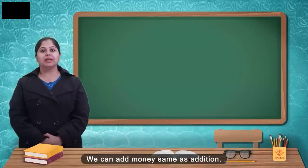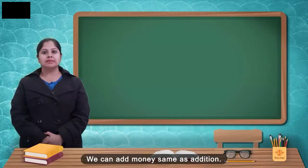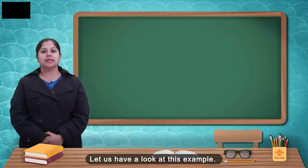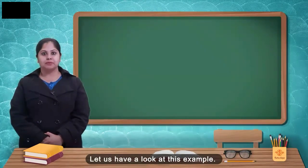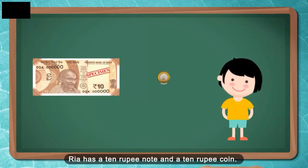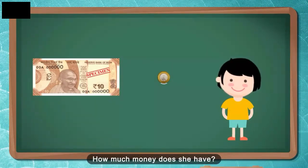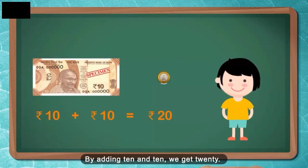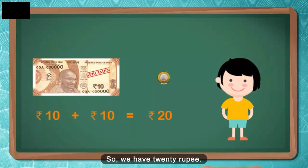We can add money same as addition. Let us have a look at this example. Rhea has a 10 rupee note and a 10 rupee coin. How much money does she have? By adding 10 and 10, we get 20. So, she has 20 rupees.